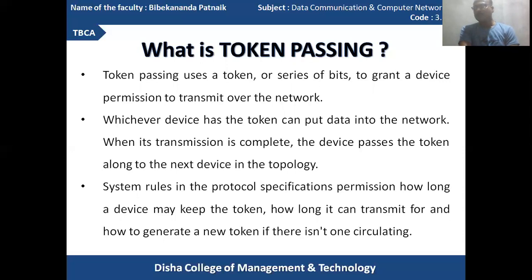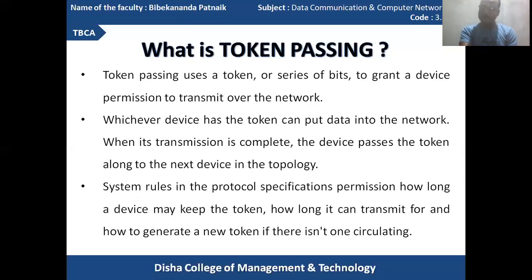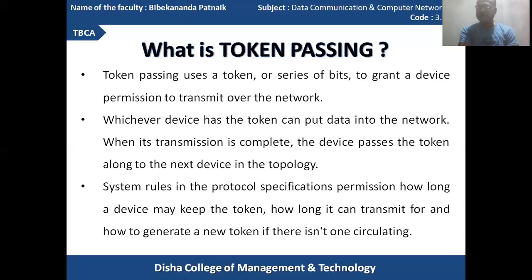Station 1 can pass data to station 3, with the intermediate node in the ring topology — station 2 — retransmitting the token to station 3. The system rules in the protocol specification define permission for how long a device may keep the token — it depends on the subsequent station, how long the token may be held inside a station.